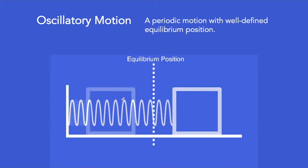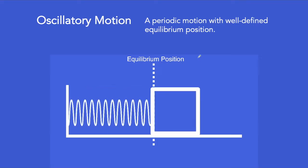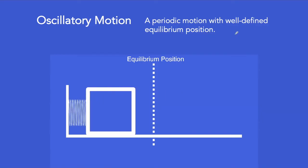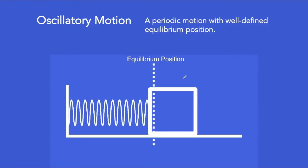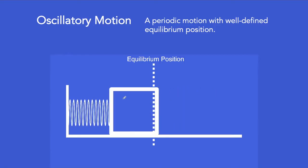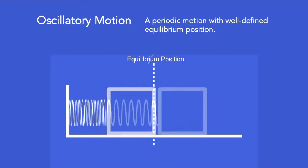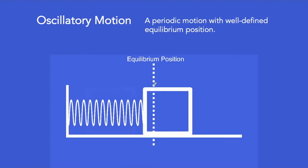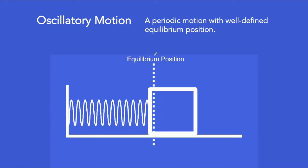When we say oscillatory motion, it is a type of periodic motion with a well-defined equilibrium position. In this example, when the pushing force of the spring is balanced by its pulling force, then this block stays at an equilibrium position.